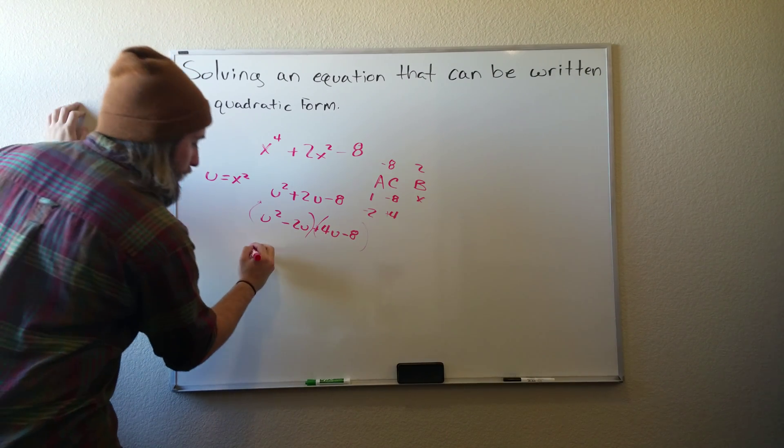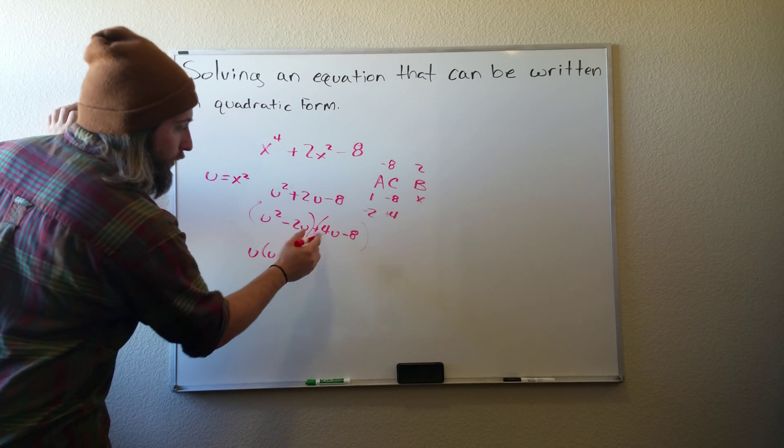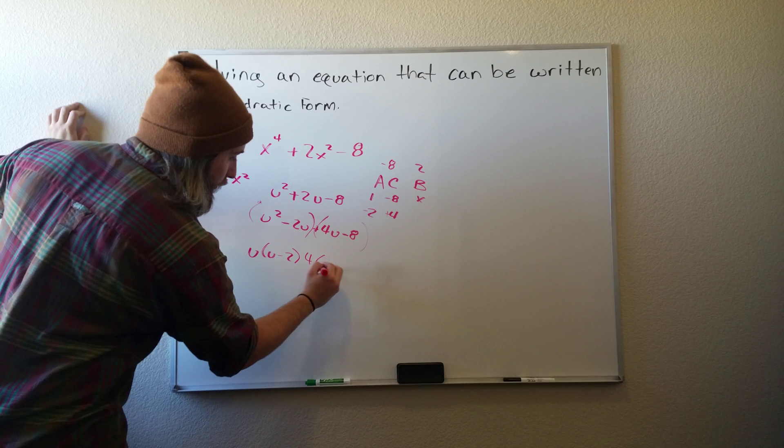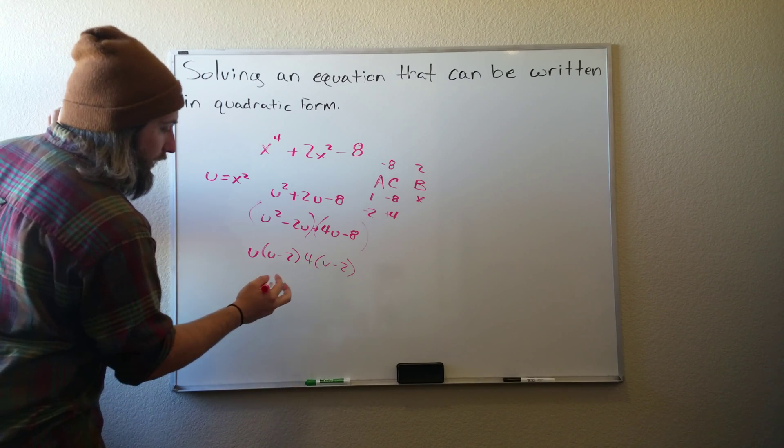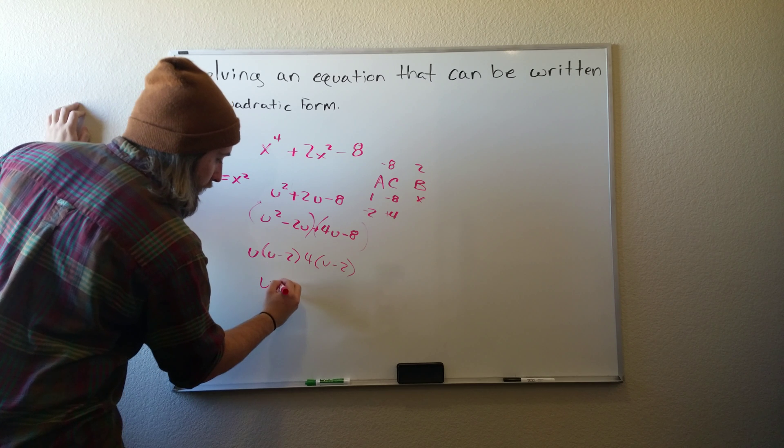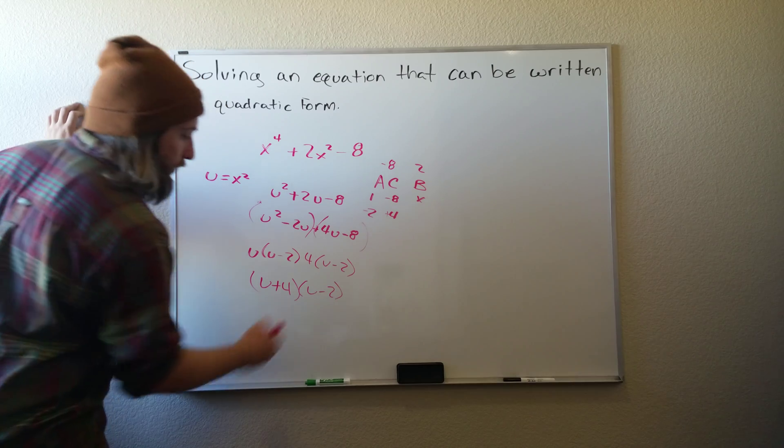So we'll bring out a u and we get u minus 2 left over. We'll bring out a 4 in the second one, we get u minus 2 again. Since these two are the same, we know we did it right. So we'll have u plus 4 times u minus 2.